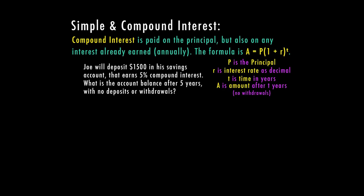Let's check out Joe again. Joe's going to deposit $1,500 in his savings account that earns 5% compound interest. What is the account balance after five years with no deposits or withdrawals? We'll use our formula: A equals P times one plus R to the T power. Since one plus R is in parentheses, you do have to solve that first if you're plugging it into a calculator, and if you're using a graphing calculator you'll need to either use the parentheses or solve for that before you plug it in.